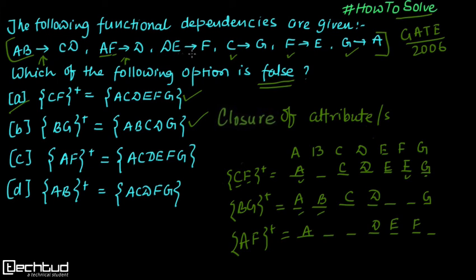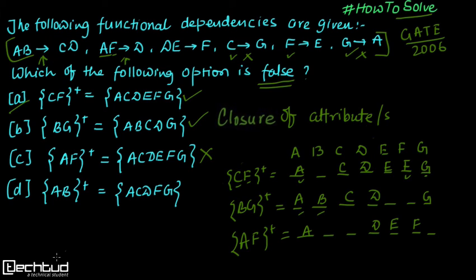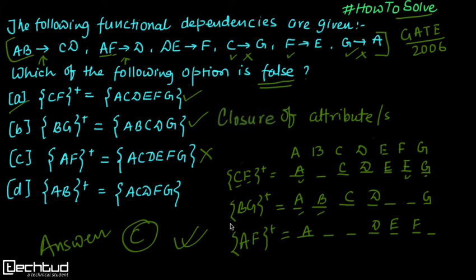Repeating the check: DE→F gives F which is already determined; C→G cannot be used as we don't have C; G→A cannot be used as we don't have G. There is no change in this iteration, so the final closure of AF is {A, D, E, F}, which is not equal to what is given in option C. Since this option is wrong, the answer is C. I hope you understand this - if you have any doubt, please ask in the doubt section or comment below. Thanks for watching.